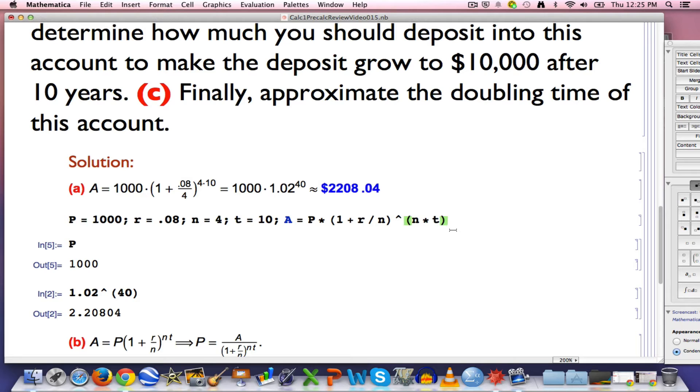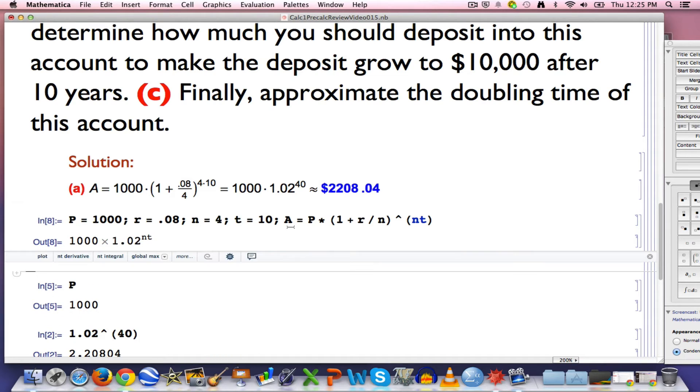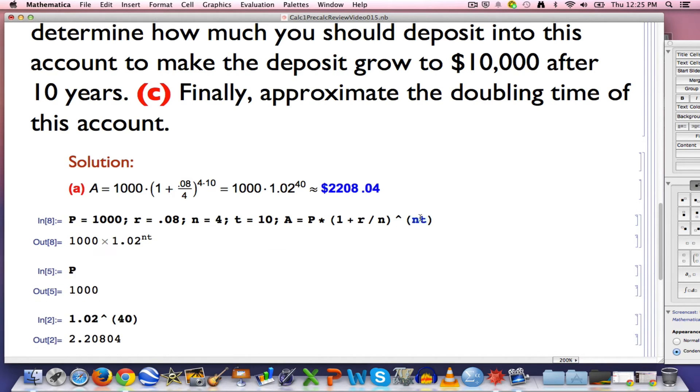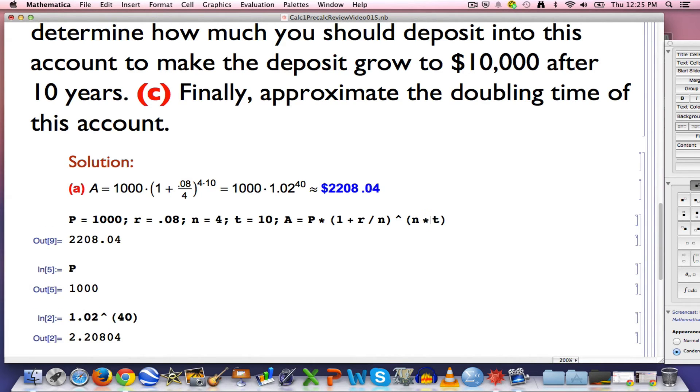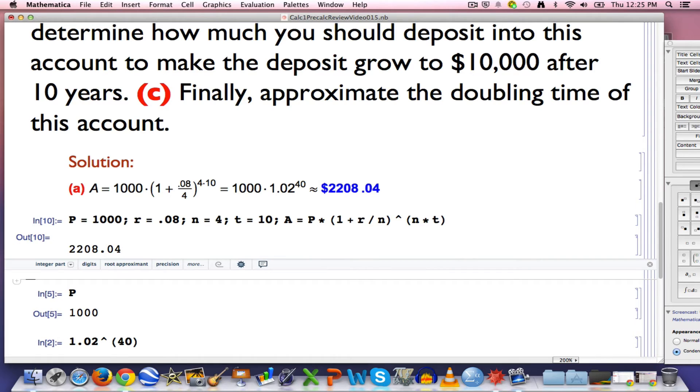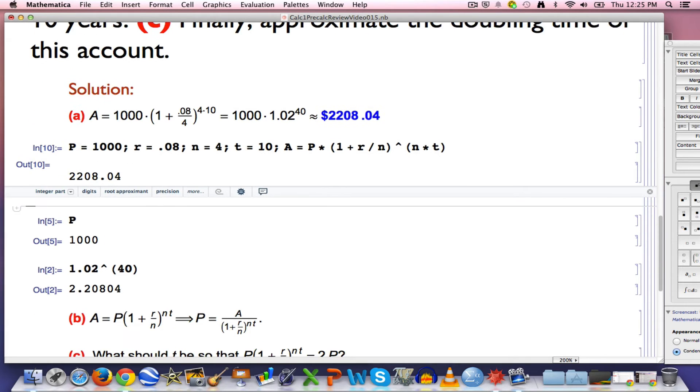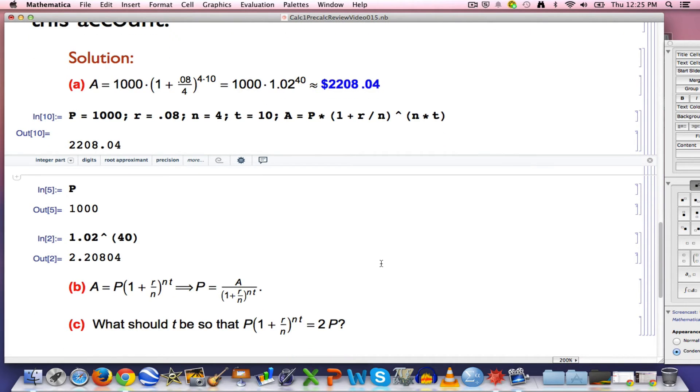And now I can also find the value of A by typing the formula in like this. Which brings up another Mathematica point. If I want to have N times T up here like I have, I do need to either put a star there or have a space between the N and the T. If I just put the N and the T next to each other, that's a problem because Mathematica doesn't know what the variable NT is. It thinks of this as one variable. If you put a space between them or as a default put a star, it will multiply them and do the right thing. So the answer there is 2208.04.